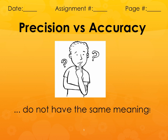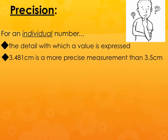We use precision and accuracy kind of interchangeably on a regular basis during regular conversation, but they aren't the same. So that's what we're going to talk about — what's the difference between the two.